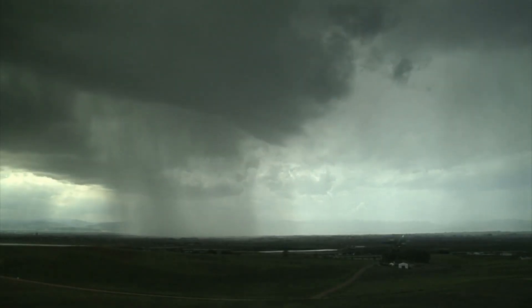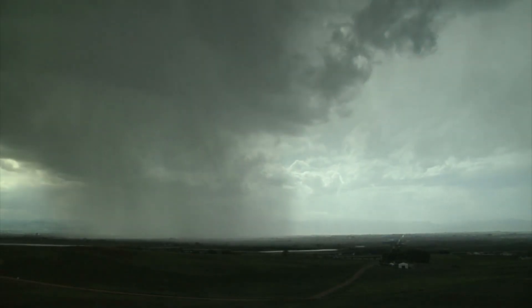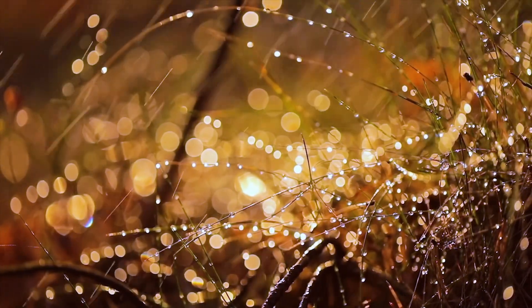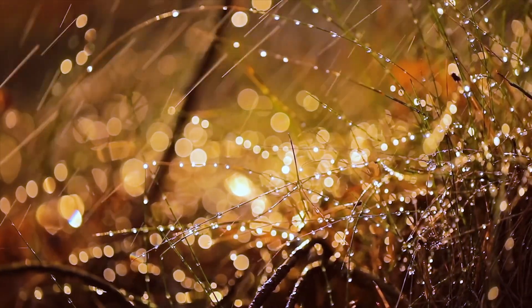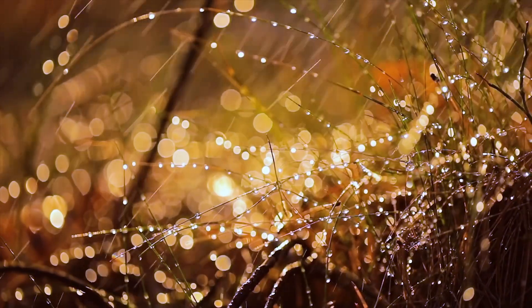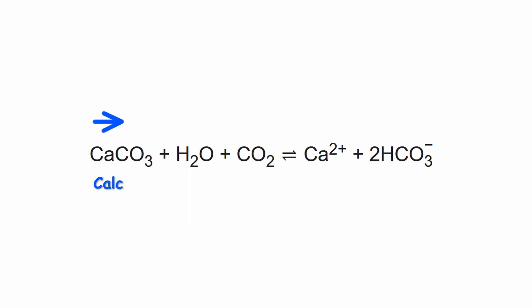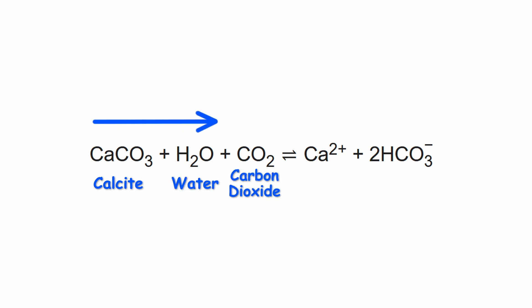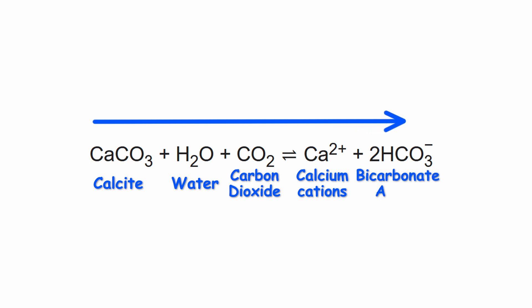The water originally comes from rainfall. On its way to the ground, rainwater dissolves CO2 from the atmosphere, and on the ground the water picks up additional CO2 from plant roots and decaying organic matter. When that rainwater percolates through the rocks and encounters carbonates, it dissolves calcite until it becomes saturated. Calcite plus water plus CO2 goes to calcium cations and bicarbonate anions.